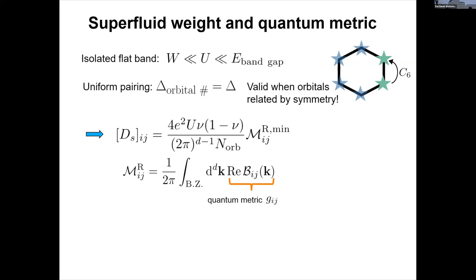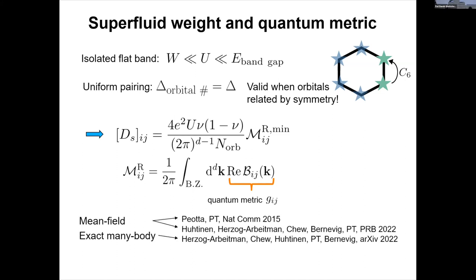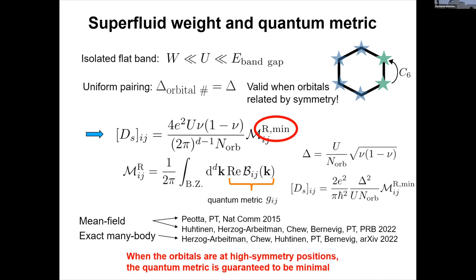And this thing is the quantum metric integrated over the Brillouin zone. So Professor Fu was calling this quantity a quantum weight. But it's this integral. So there we have the quantum geometric part. And this has been shown by mean field, exact results, and also numerically by many people. And then you can also calculate what is the gap. It's like this and using that, you get that the superfluid weight is proportional to the square of the gap. Note here something. So one actually has to take the minimum value of this thing. Because this is something that has not been widely appreciated or actually noticed at all before this work.